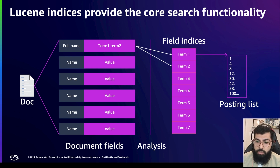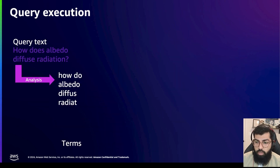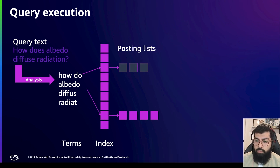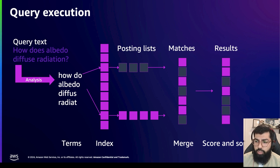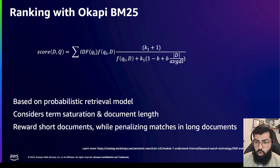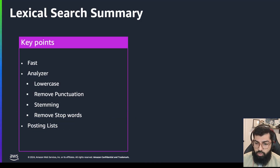Now that the document is indexed, we can query it. Here is an example of a search query. The search query also goes through the analysis process described earlier. Lucene will then look for the terms that we have searched for after analysis and retrieve their posting lists. Then Lucene merges the posting lists and applies a ranking score to each document on how relevant it is — meaning how well it matches the query that the user submitted. OpenSearch uses a ranking algorithm called Okapi BM25. That is, in essence, what lexical search is.